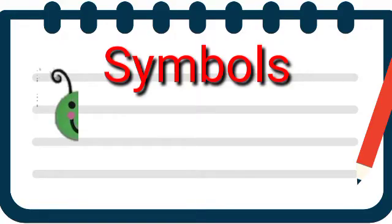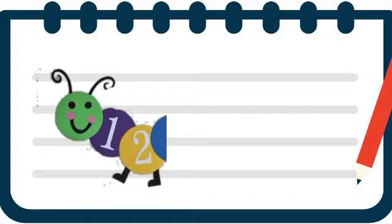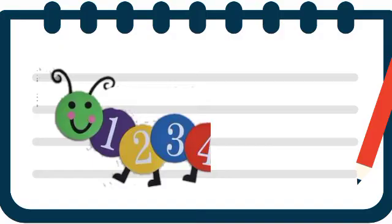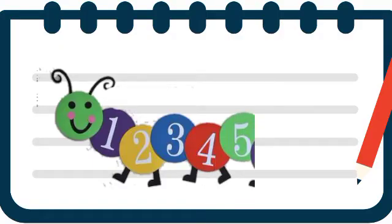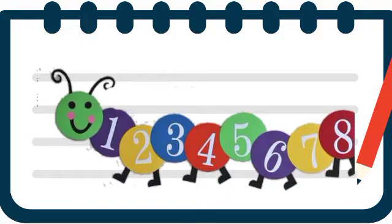This is a symbol of 1 — he ekya aankancha chinh ahe. This is a symbol of 2 — he doniya aankancha chinh ahe. This is a symbol of 3 — he teenaya aankancha chinh ahe. And this is a symbol of 4 — he chaaryaa aankancha chinh ahe.